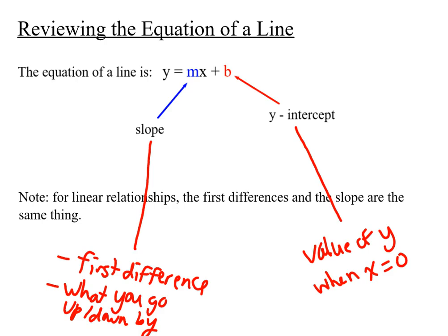Coming back to the equation of a line, we now know that the first part — the something-x — is actually the slope. It's the first difference; it's what you go up and down by, and in math we call that the letter m. The second part is the y-intercept, or the value of y when x is zero, and in math we call that b. So the equation of a line is the formula y equals mx plus b, and you've actually been working with this all along — you just didn't know what the things were called.